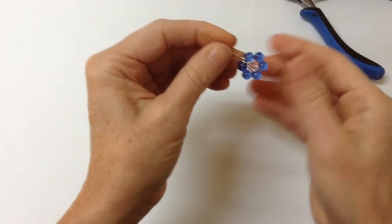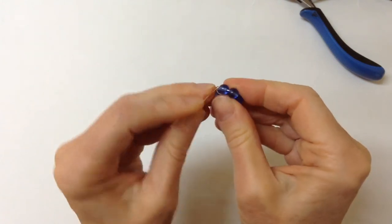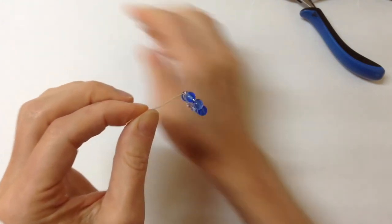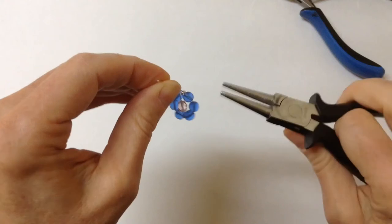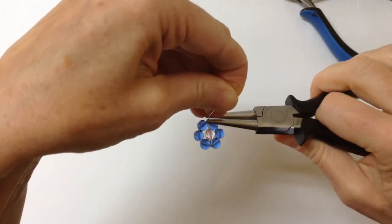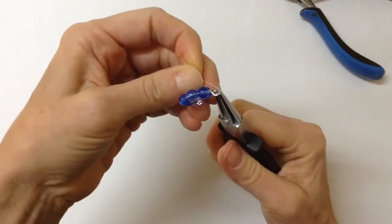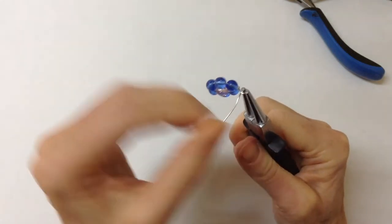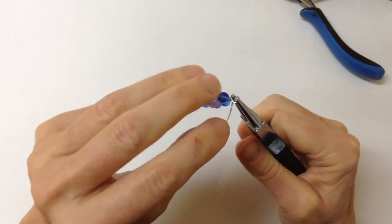And then to make the loop at the top, you're actually going to bend it towards the front at about 45 degrees, take your large round pliers, twist it around, make a complete circle like that.